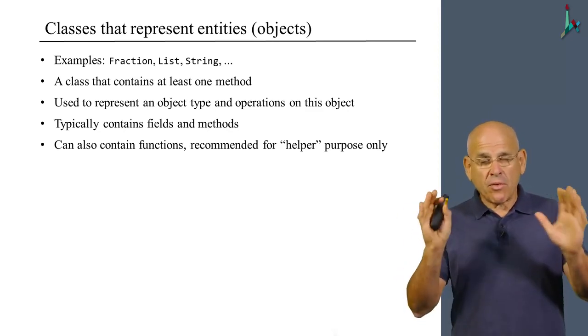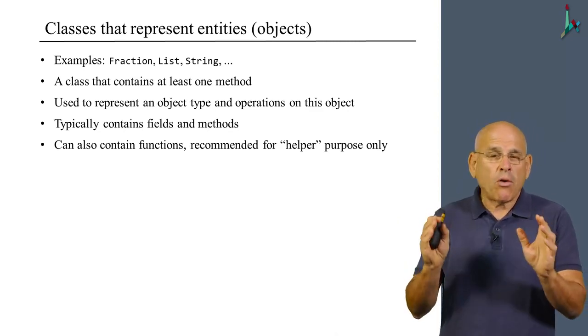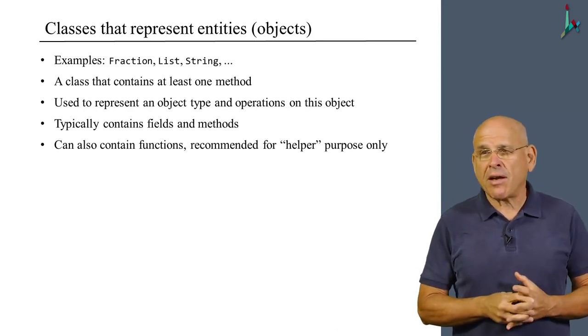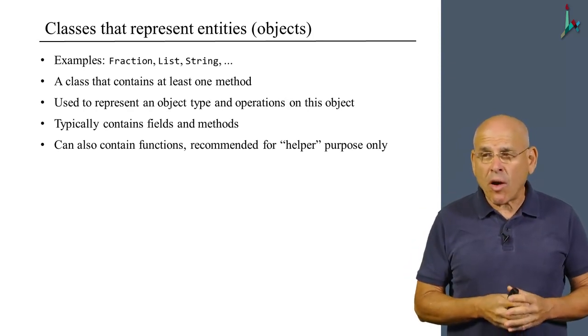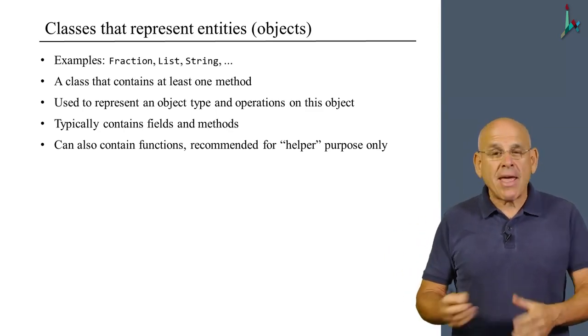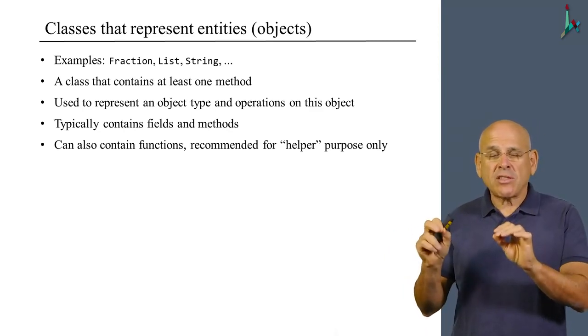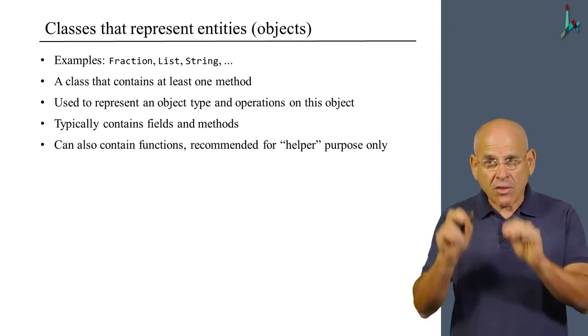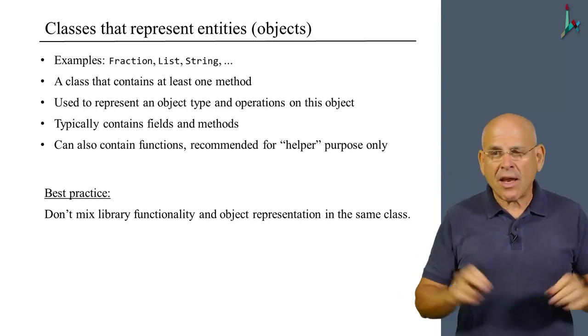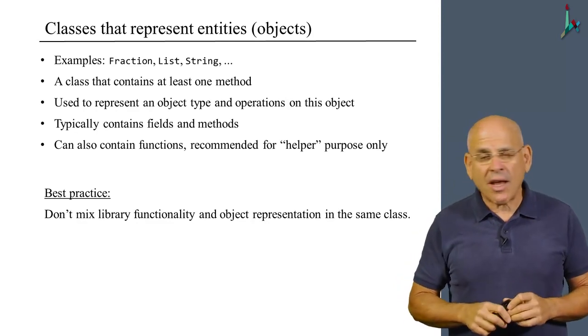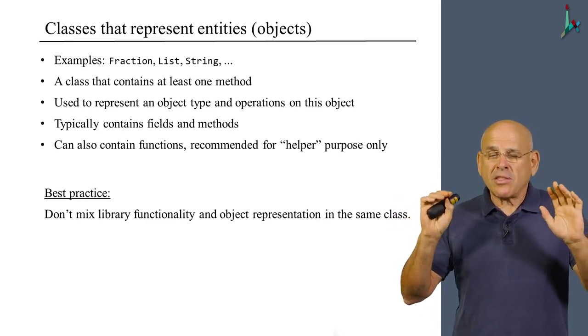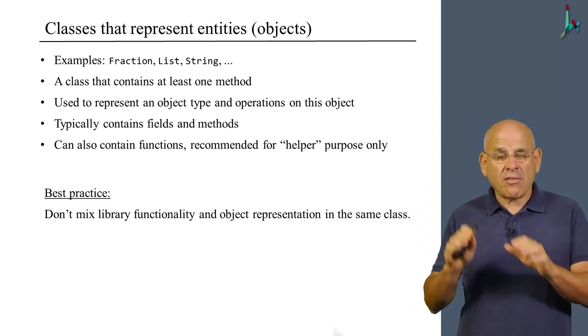However, as a general advice that has nothing to do with this course, you should remember not to expose these helper functions to the rest of the world, to other classes outside your particular class that is designed to represent objects. If you do want to create some functionality that is not related to objects of this class and may help other clients as well, you should take these functions and put them elsewhere. You should put them in separate classes, not in this one. The general advice is not to mix library functionality with object representation functionality in the same class. You should separate them. And once again, these are general software engineering propositions which are not directly related to this course.